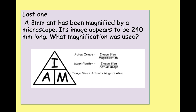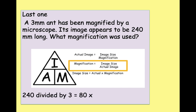Last one. A 3 millimetre ant has been magnified by a microscope and the image appears to be 240 millimetres long. What magnification was used? Pause the video and try putting the numbers in. We use magnification equals image size divided by actual size — that's 240 divided by 3 — so an 80 times magnification was used. Really well done if you pushed on and tried all three by yourself. There are still more questions on Educate you'll need to use this information to complete.